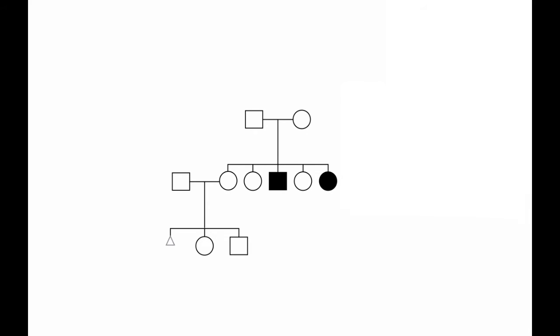The filled symbols indicate individuals who are affected by a particular phenotype. One can use any kind of manner of depicting a phenotype. If multiple phenotypes are being tracked, for example, one can divide the symbols into sectors, indicating a specific phenotype in each sector.